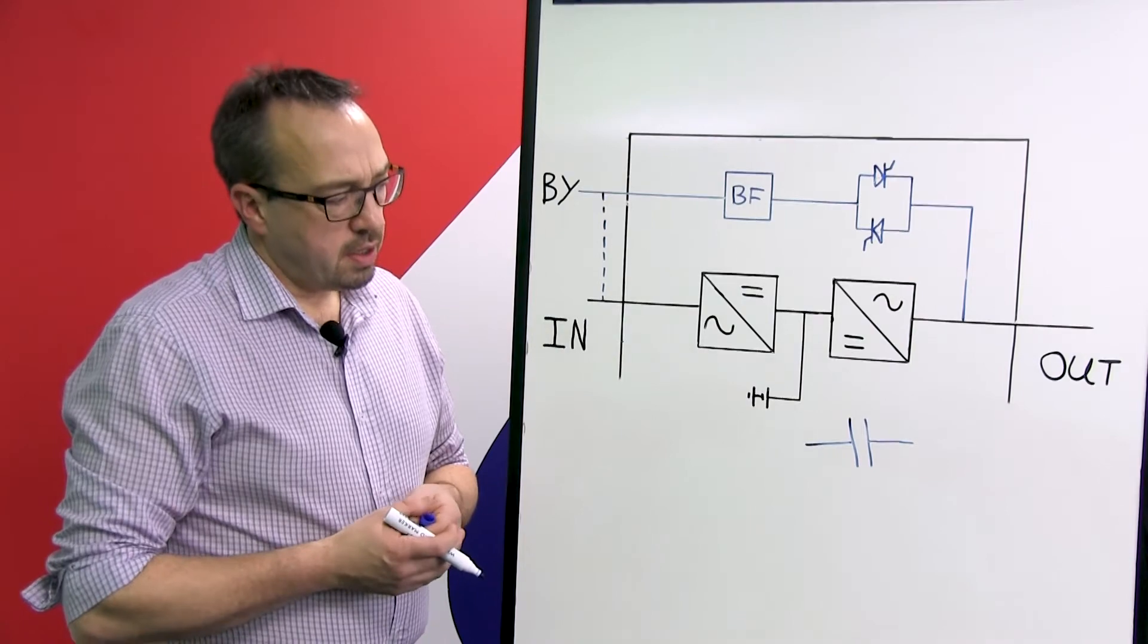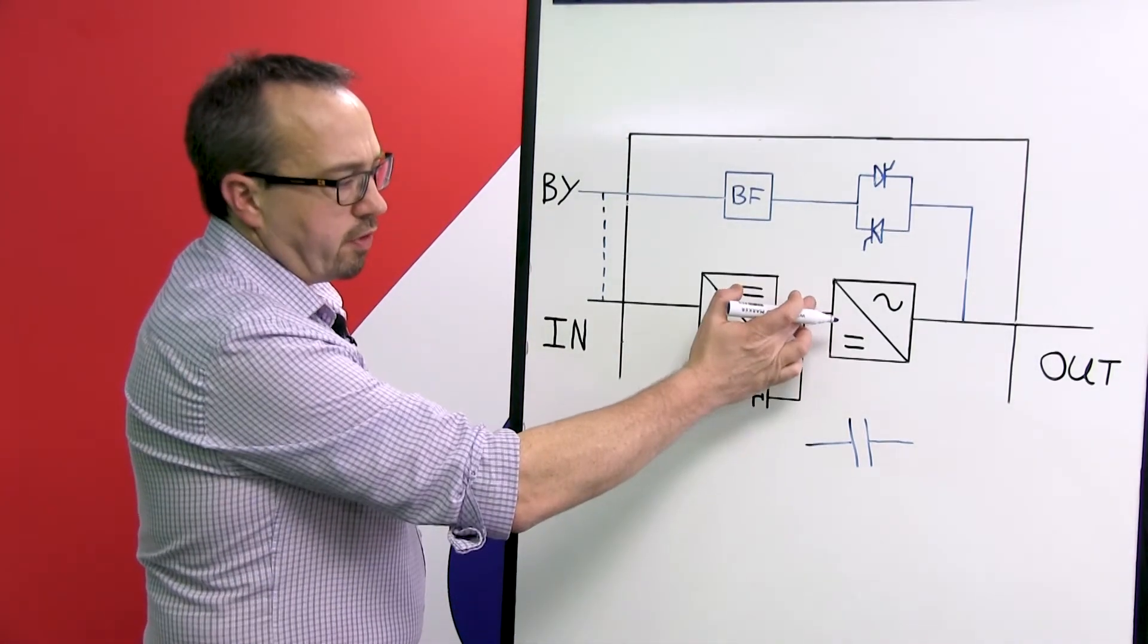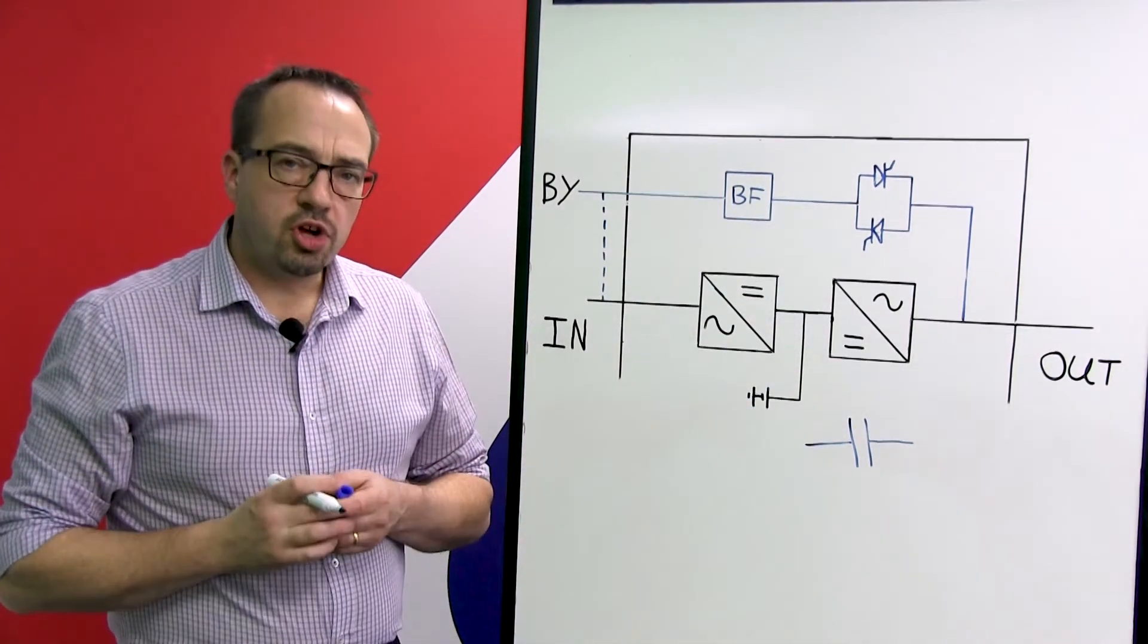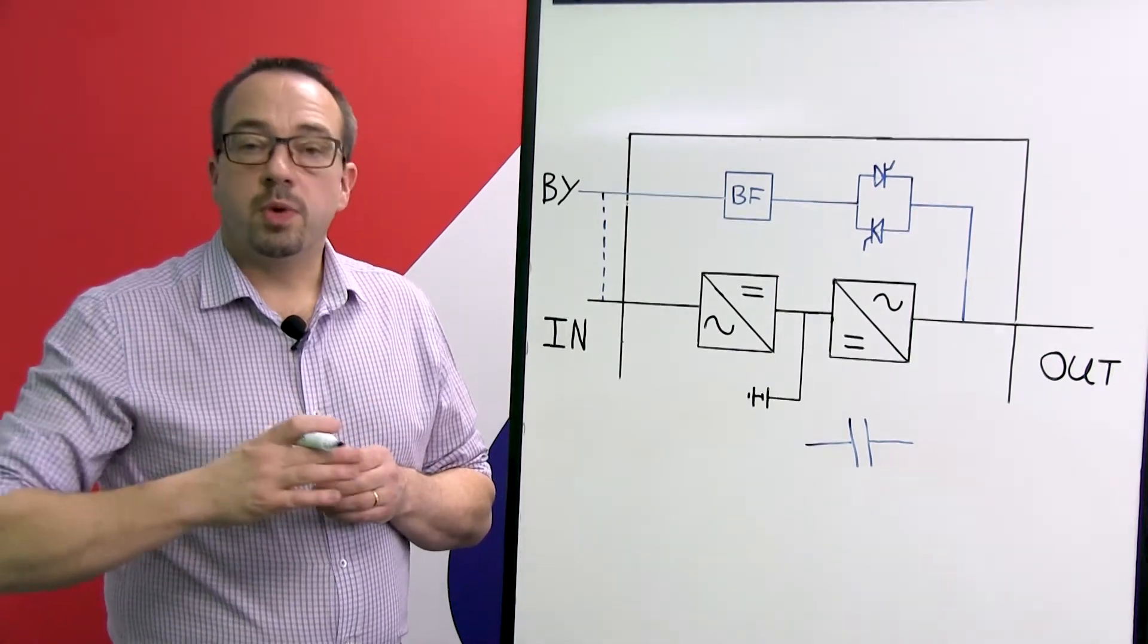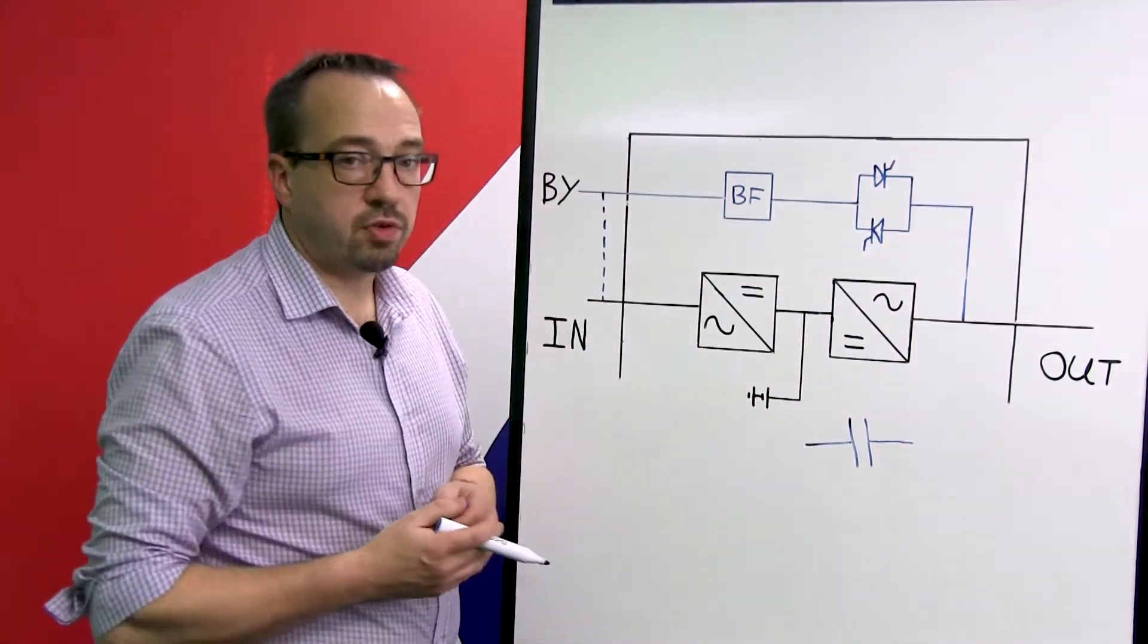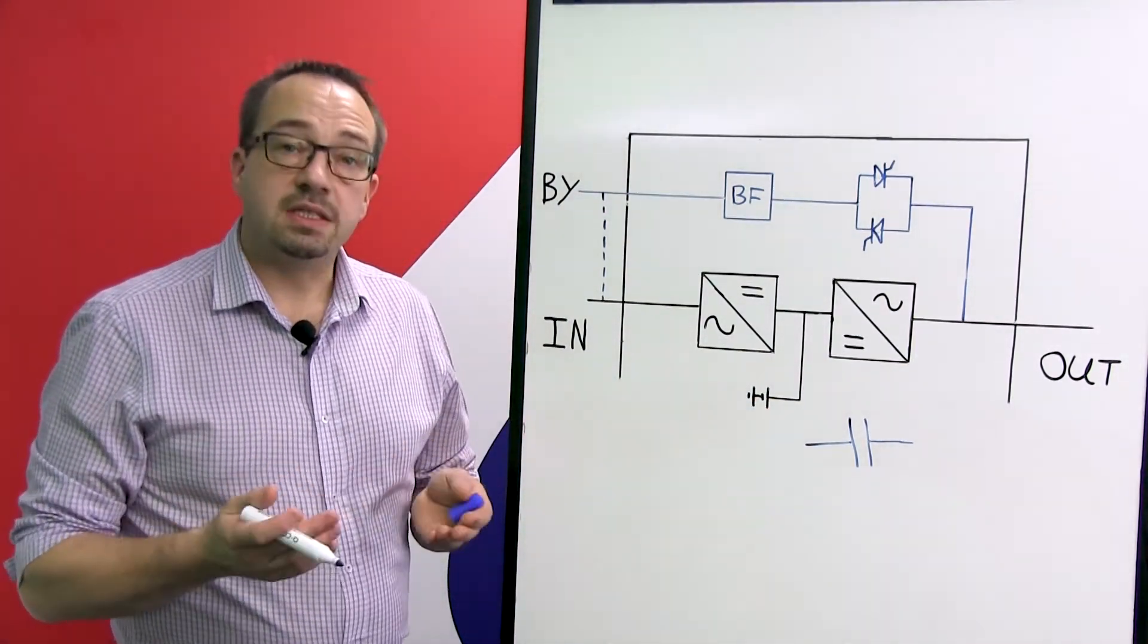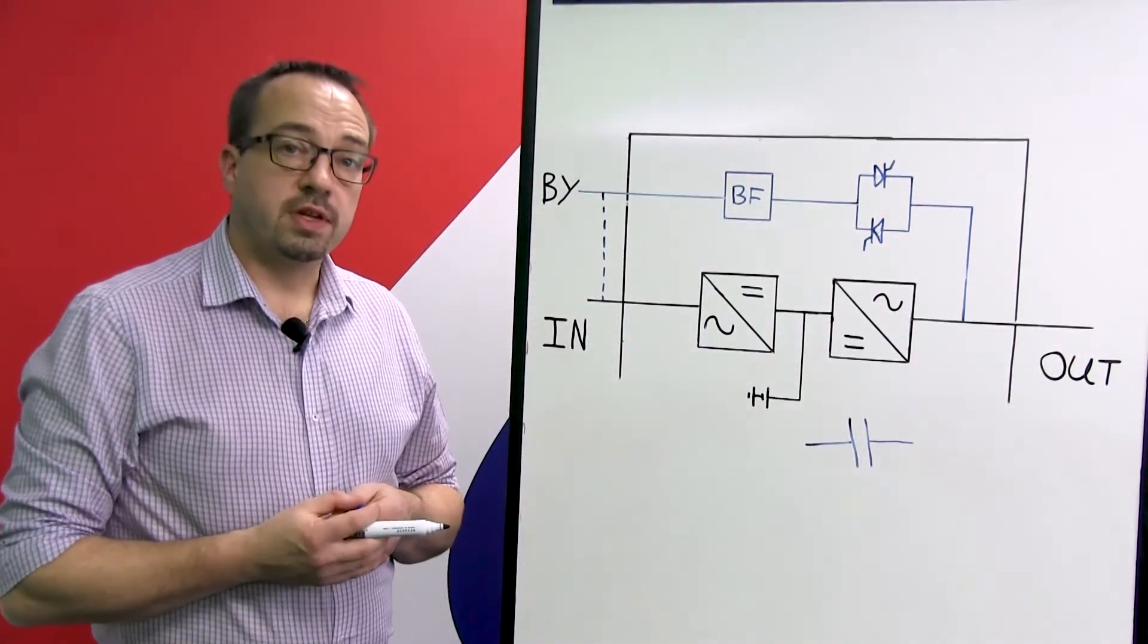The purpose of a capacitor is to ensure that whilst we are transferring between the rectifier output and onto the batteries, the capacitor will hold up that DC rail for a long enough time so that we can make that transfer and the inverter does not see any disruption in the source of electrical power. Therefore, the inverter can continue operating and hence continue providing the protected load with a clean source of electrical power.